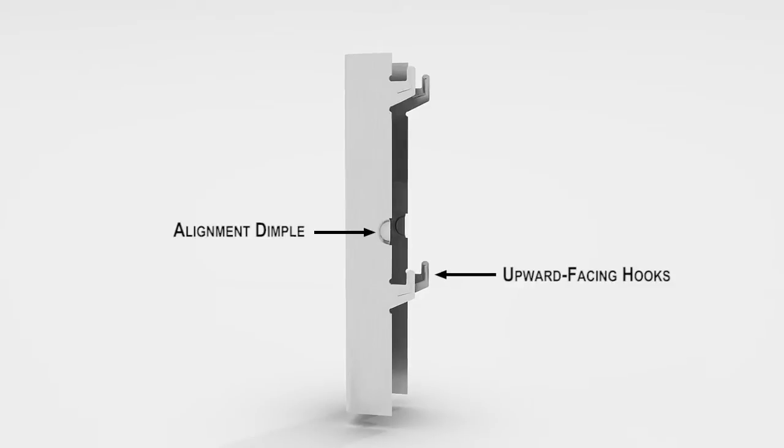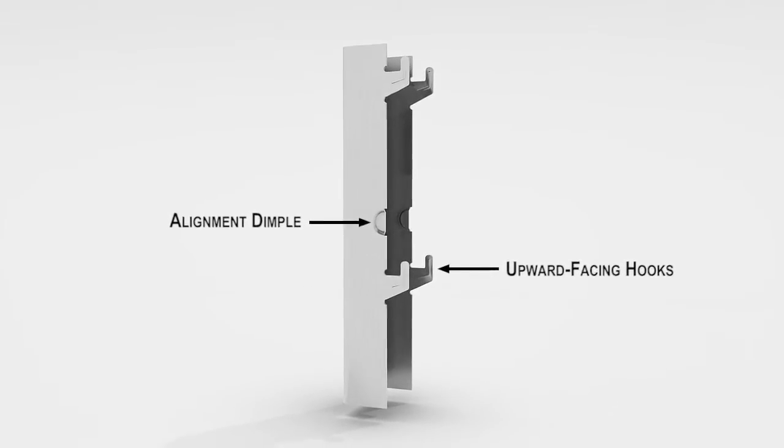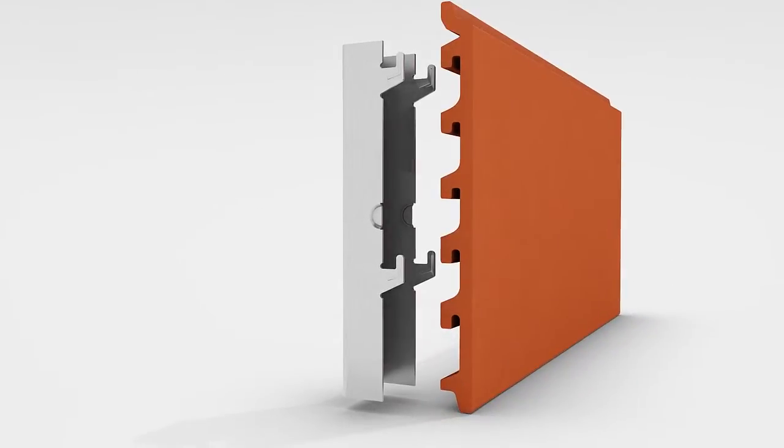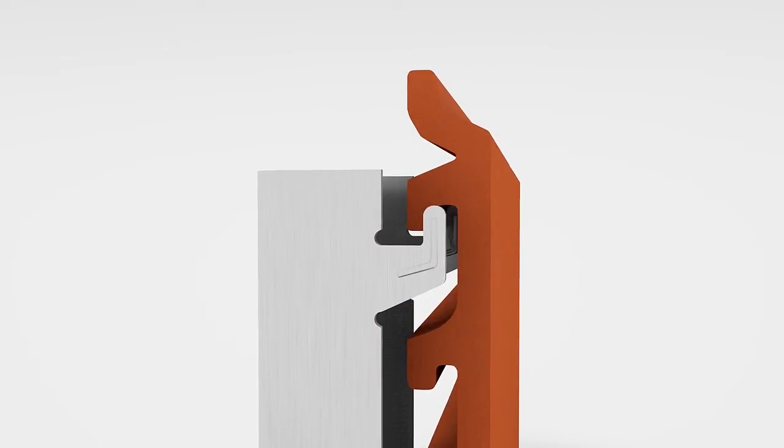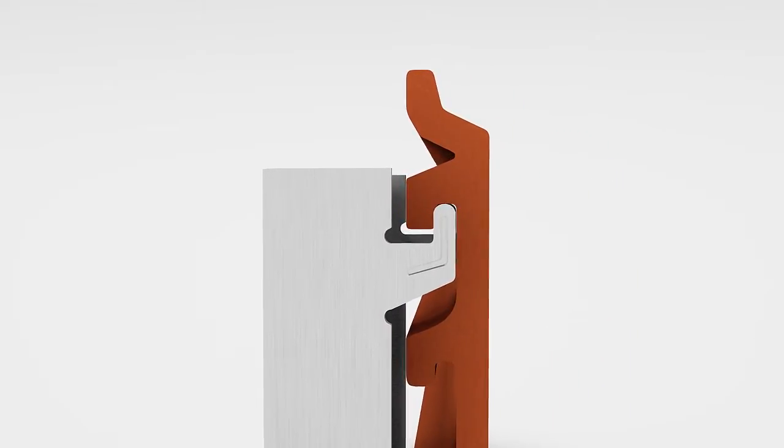As you can see, it incorporates a series of upward facing hooks which engage the reinforcing ribs on the panel. Notice the precise shape of the ribs and upward facing hooks and their perfect fit.